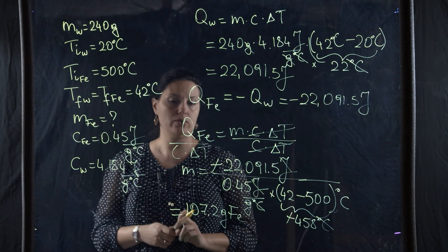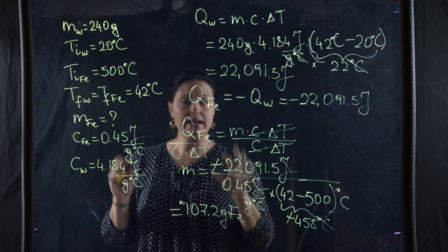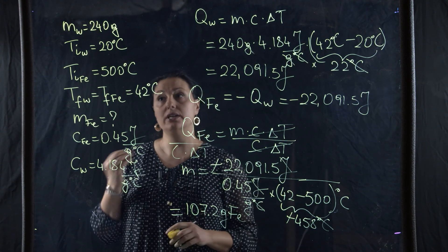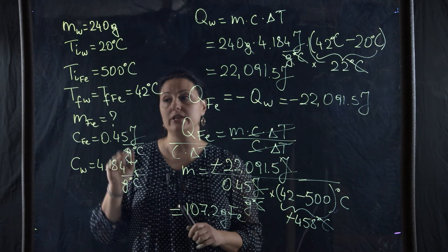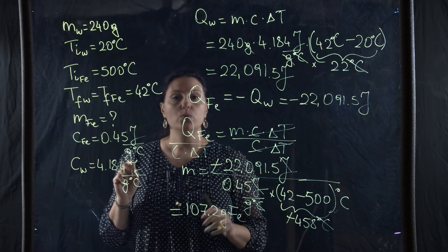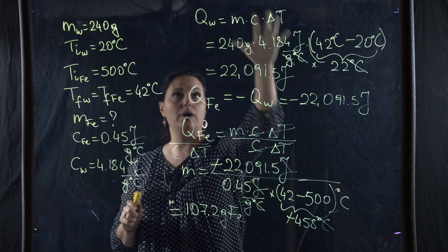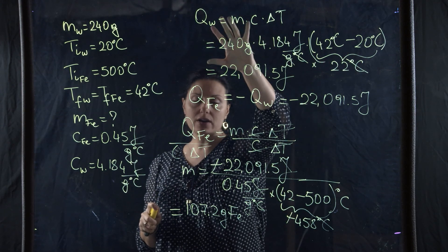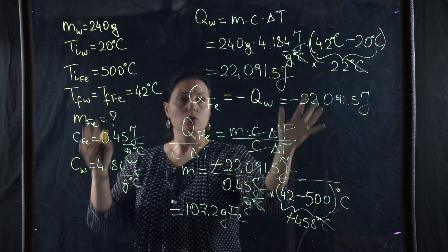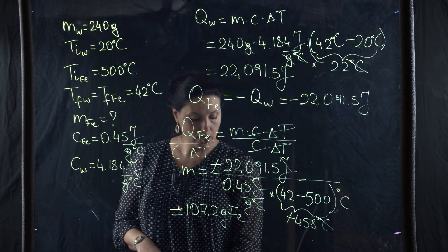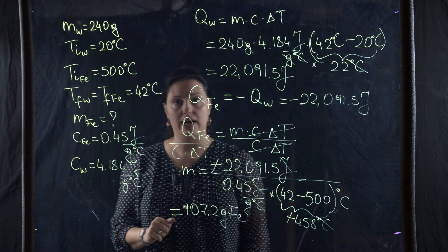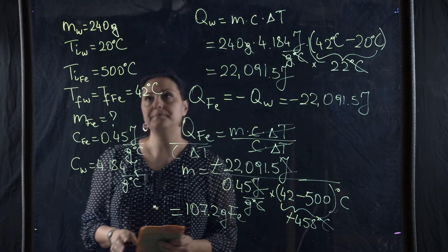That is how you calculate the mass of iron — you can break it into two pieces. In the next problem, when we calculate final temperatures, we will have to combine both equations simultaneously. We cannot split them apart like we did here. Let's look at the next problem where we have to solve simultaneously.